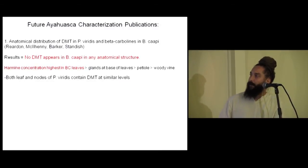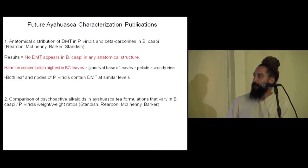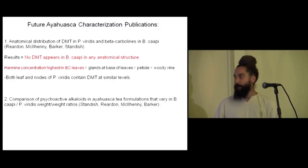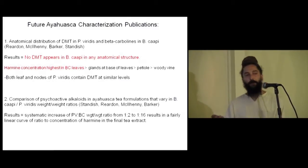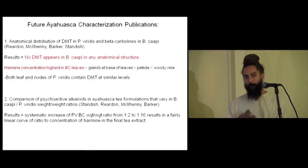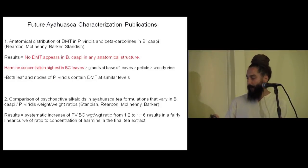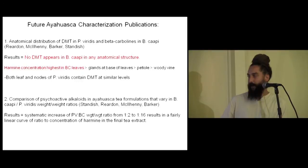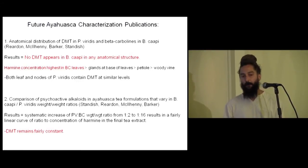We found that both the leaf and the nodes of P. viridis contain DMT. A second study looked at comparing the weight ratios in brewing methods. The idea was that if you have more of the vine in the brew, it might protect the DMT from the Psychotria — and we found that not to be the case. We found a pretty linear relationship in harmine as you increase the ratio from 1:2 to 1:16, and the DMT does remain pretty constant.